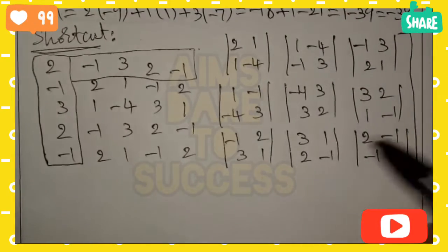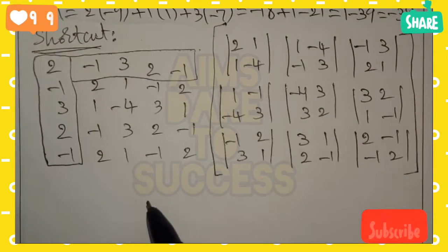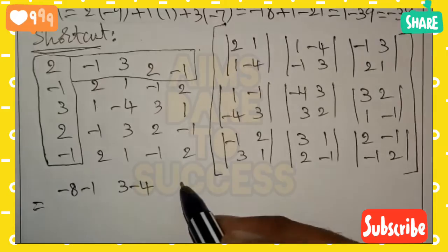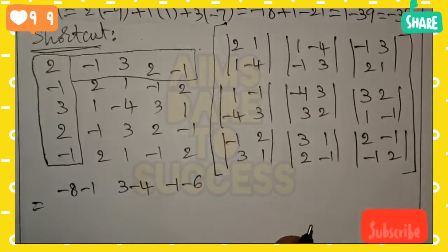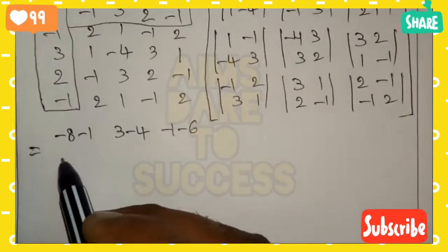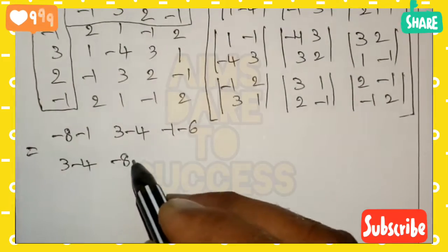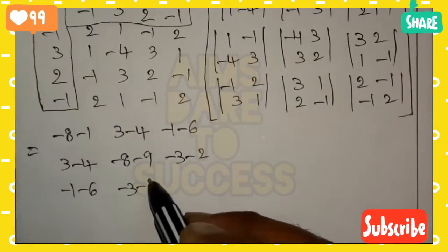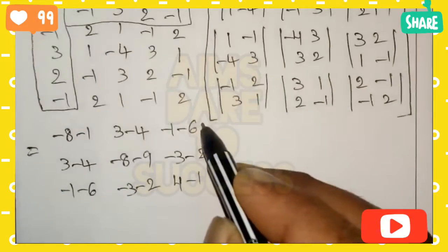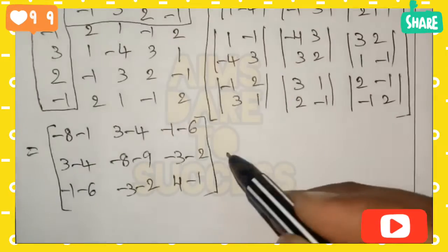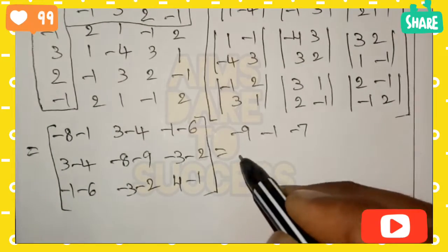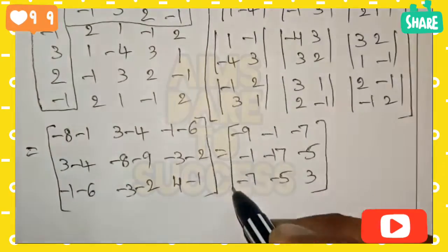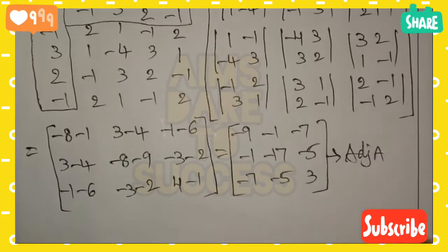Now apply the ad minus bc formula to each 2×2 determinant. Column 1: (2)(minus 4) minus (1)(1) = minus 8 minus 1 = minus 9; (1)(3) minus (minus 4)(1) = 3 plus 4 = minus 1 — wait, that is minus (minus 1)(1) minus (3)(2) = minus 1 minus 6 = minus 7. Column 2: (1)(3) minus (minus 4)(1) = 3 plus 4; (minus 4)(2) minus (3)(3) = minus 8 minus 9 = minus 17; (3)(minus 1) minus (2)(1) = minus 3 minus 2 = minus 5. Column 3: (minus 1)(1) minus (2)(3) = minus 1 minus 6 = minus 7; (minus 3)(1) minus (2)(1) = minus 5; (2)(2) minus (minus 1)(1) = 4 plus 1 = 3. So adjoint A is the matrix [minus 9, minus 1, minus 7; minus 1, minus 17, minus 5; minus 7, minus 5, 3].